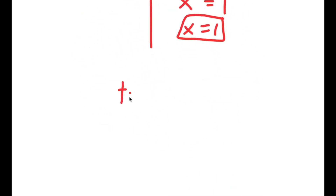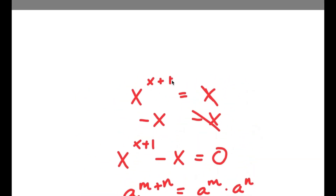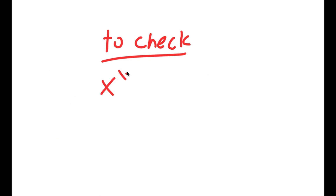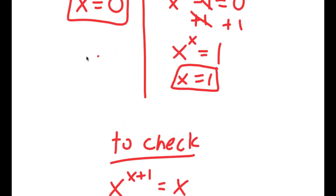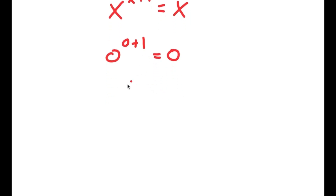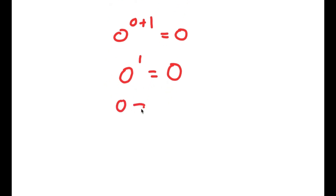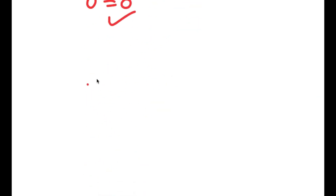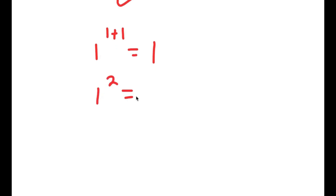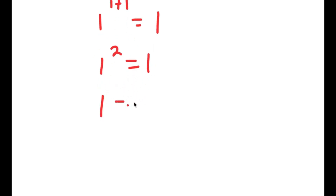Now to check, the original equation was x to the power of x plus 1 equals x. For our first solution x equals 0: 0 to the power of 0 plus 1 equals 0, so 0 to the power of 1 equals 0, and 0 to the power of any number is itself, so 0 equals 0. Now to check for x equals 1: 1 to the power of 1 plus 1 equals 1, so 1 to the power of 2 equals 1, and 1 to the power of any number is 1, so 1 equals 1.